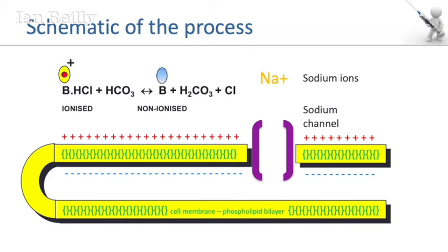The free base is liberated and it is the non-polar base that can diffuse through the nerve cell across the phospholipid bilayer. Then on the inside of the cell, where it's relatively more acidic, it reprotonates - it's known as ion trapping. So B plus H+ to BH+ once again, and it's the re-ionized form that sticks to and blocks the inside of the sodium channel.